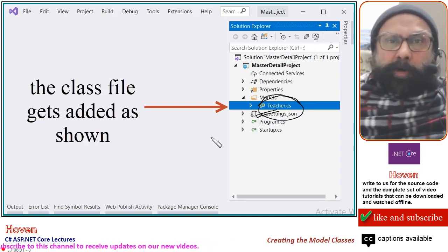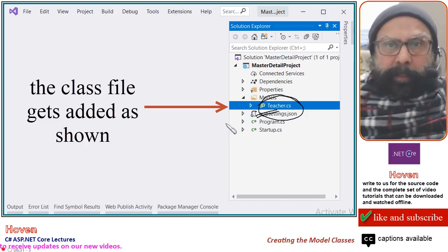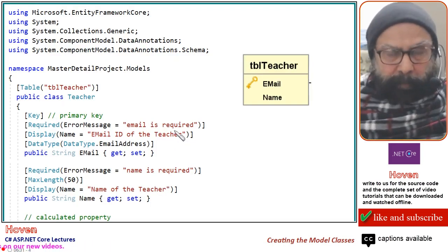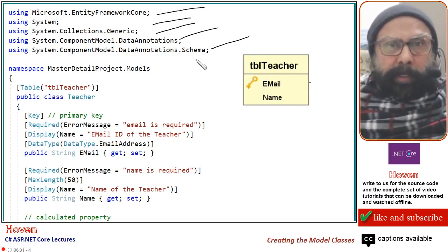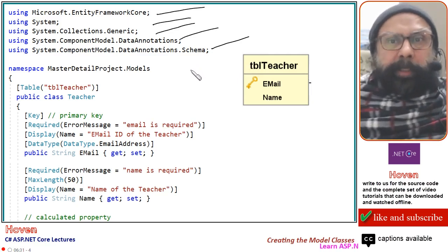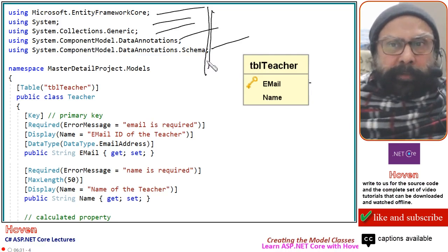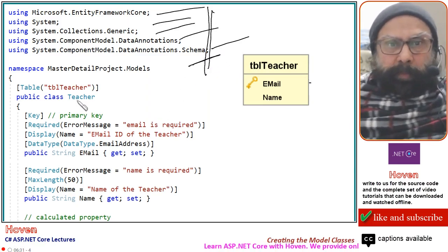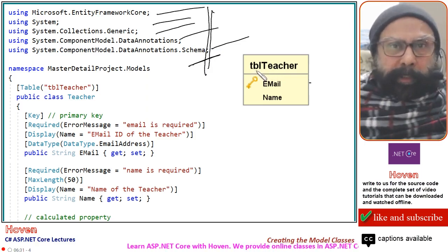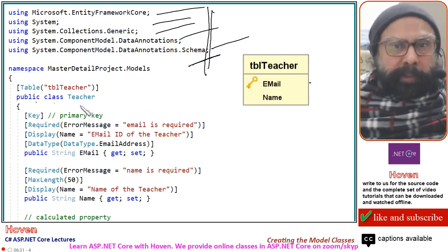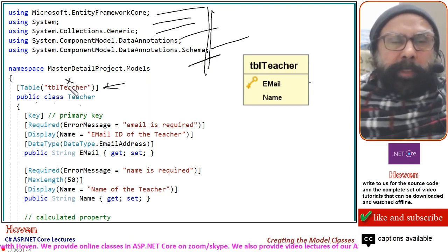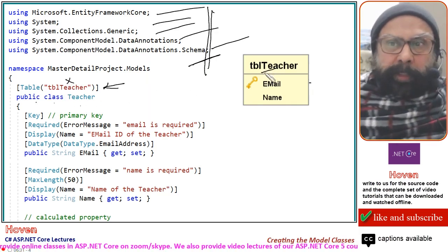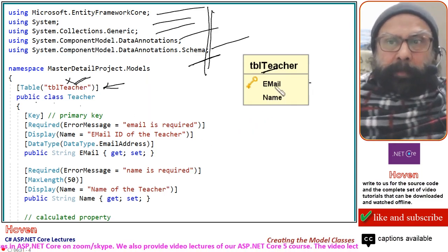Let us double-click to open and complete the Teacher class. Make sure that if any errors occur while you complete it at your own end, come back and check the using statements. We have decided to create a table called tbl_teacher, so the public class Teacher has the annotation [Table("tbl_teacher")] — this will be the name of the table in the database.